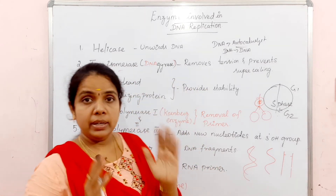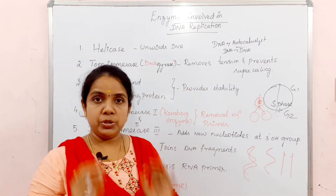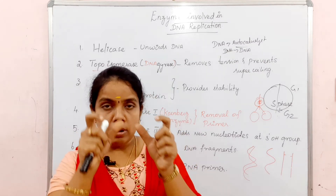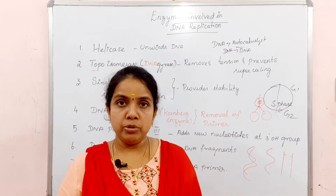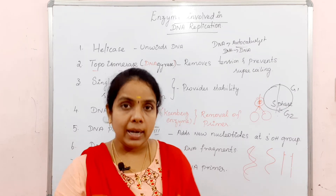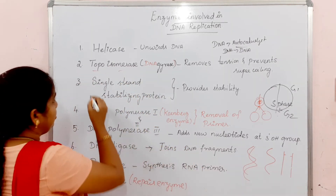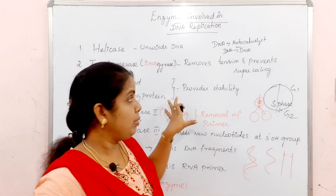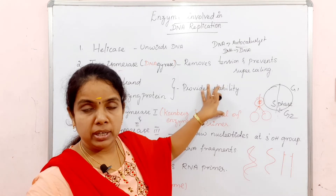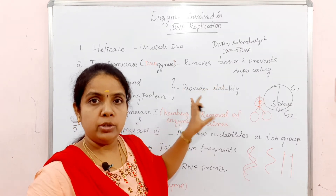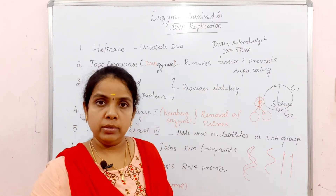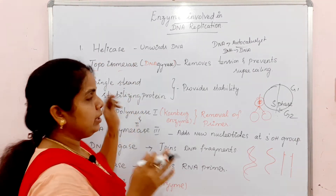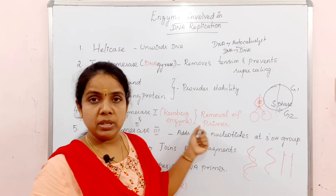Now we use the two strands of DNA and stabilize them. That is why we use a strong and stable DNA for the replication process. The enzyme that does this is called Single-Stranded Stabilizing Protein. It acts on the two strands of DNA and stabilizes them, making them very strong.